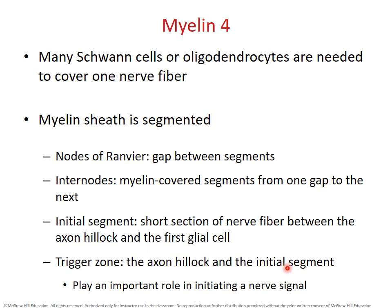The axon hillock and the initial segment together are called the trigger zone of the neuron. This is the first place where we can initiate a nerve signal — an action potential. Dendrites cannot experience action potentials, and most neuron cell bodies also cannot. Both dendrites and neuron cell bodies can experience graded potentials, but they don't have the voltage-gated channels required for action potentials. It's not until you get to the trigger zone — the axon hillock and initial segment — that you find voltage-gated channels and have the potential for action potentials.